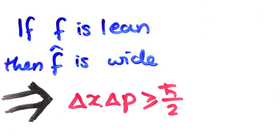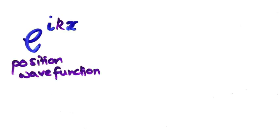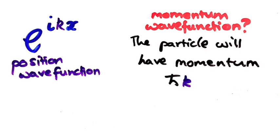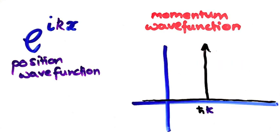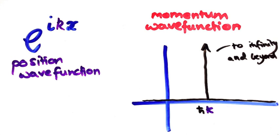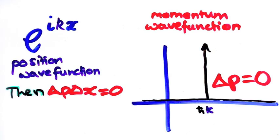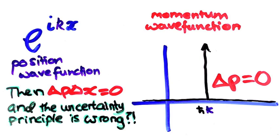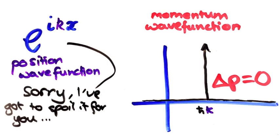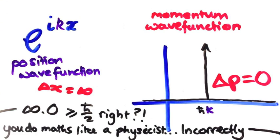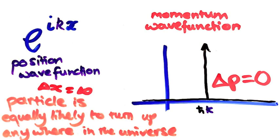Let's just try one last vain time to defy the uncertainty principle. Let's go back and look at the function e to the ikx. If this is a particle's position wave function, then what is its momentum wave function? Well, we know without a doubt that the particle will have momentum h-bar k, so its momentum wave function is just a huge spike at h-bar k. In other words, the uncertainty in momentum is zero. But if delta p is zero, then delta p times delta x must be zero, so the uncertainty principle is wrong — right? Not quite. If we actually calculate the position uncertainty, we'll find that it's infinite. This is very weird, because it means that if the momentum is perfectly known and we try to measure its position, then the particle is equally likely to turn up anywhere in the universe.